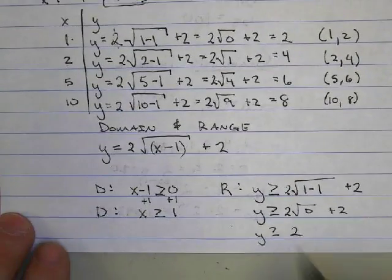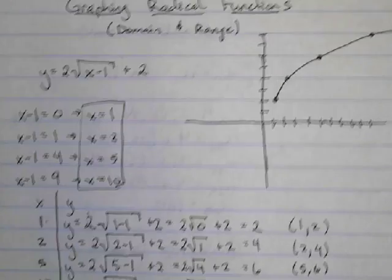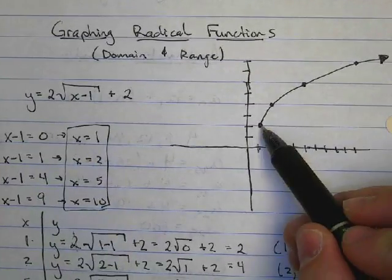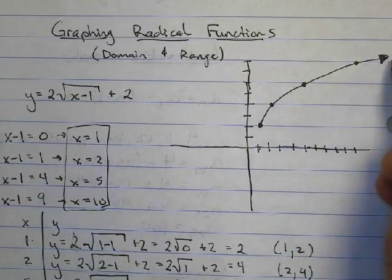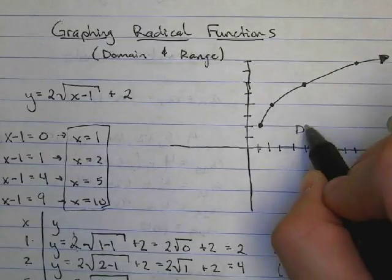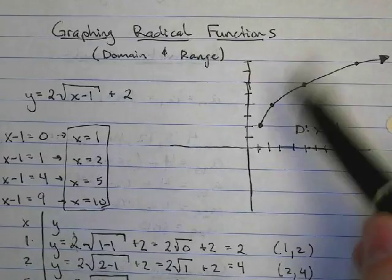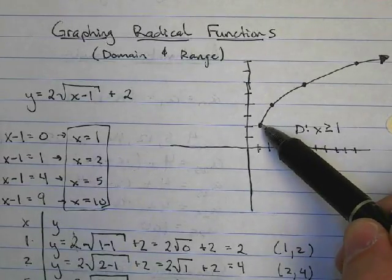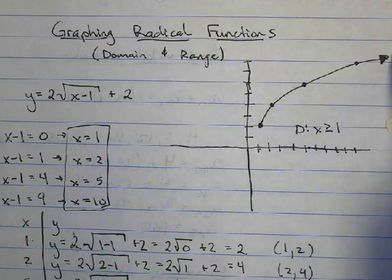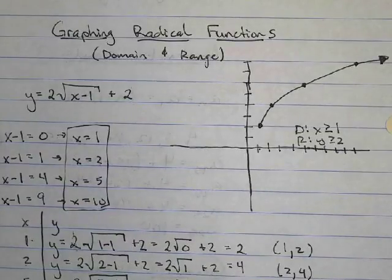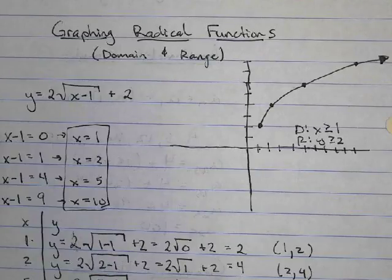That makes sense when we look at our graph. The domain is all possible x values — x starts at 1 and keeps going in the positive direction, so domain is x greater than or equal to 1. The range is all y values starting at the lowest, which is 2, going up forever, so range is y greater than or equal to 2. That's how we graph and find the domain and range of a radical function.